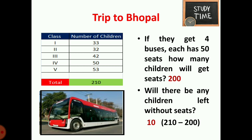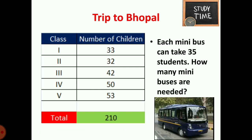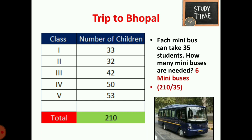The buses they got were mini buses instead, each carrying only 35 students. So they calculated: 210 divided by 35 equals 6 mini buses needed. So 6 mini buses are required for the trip.